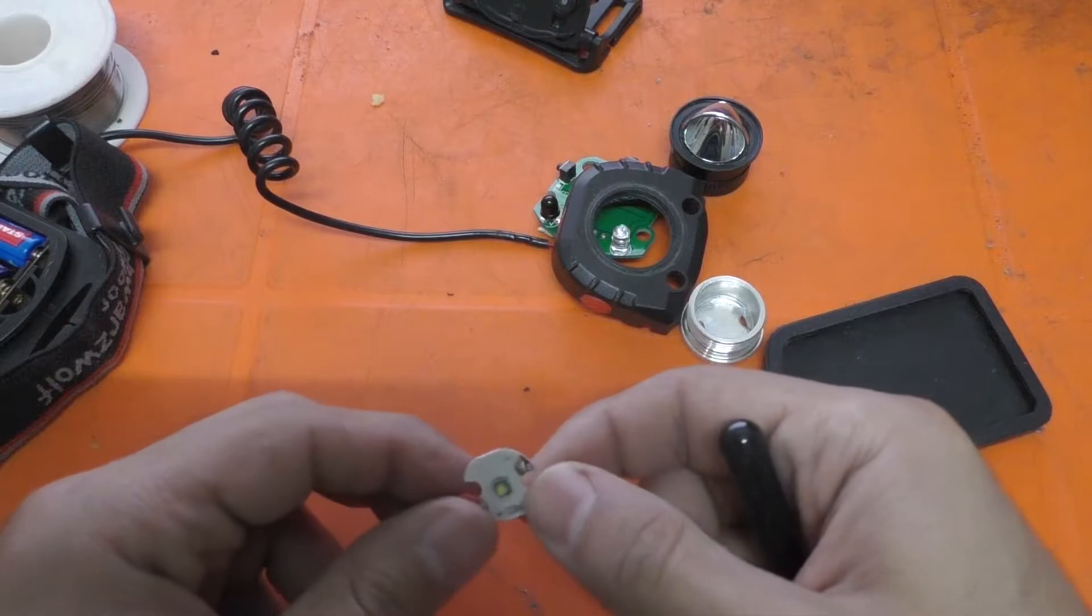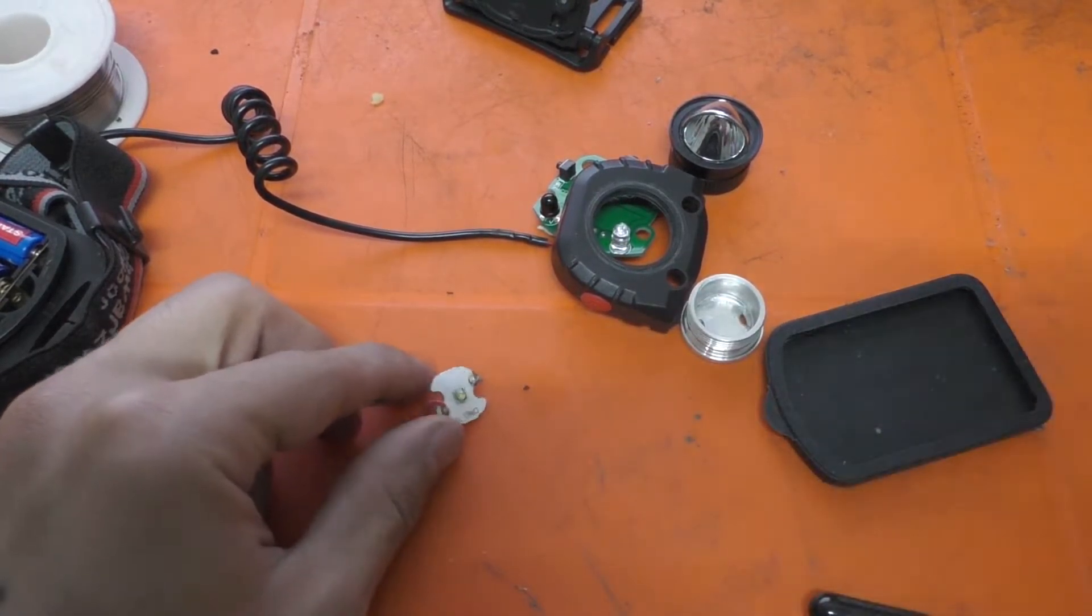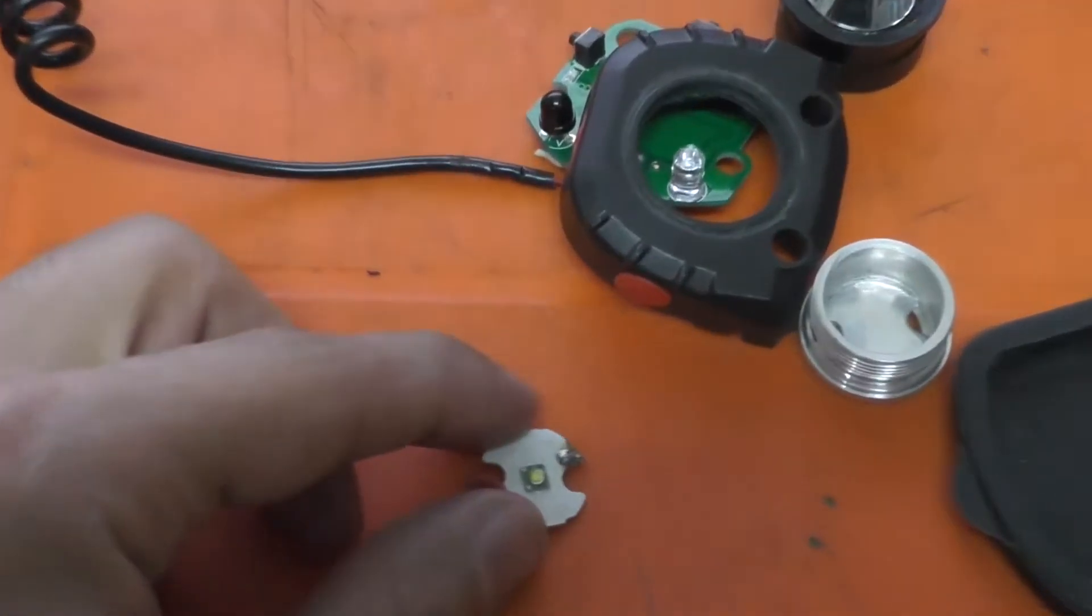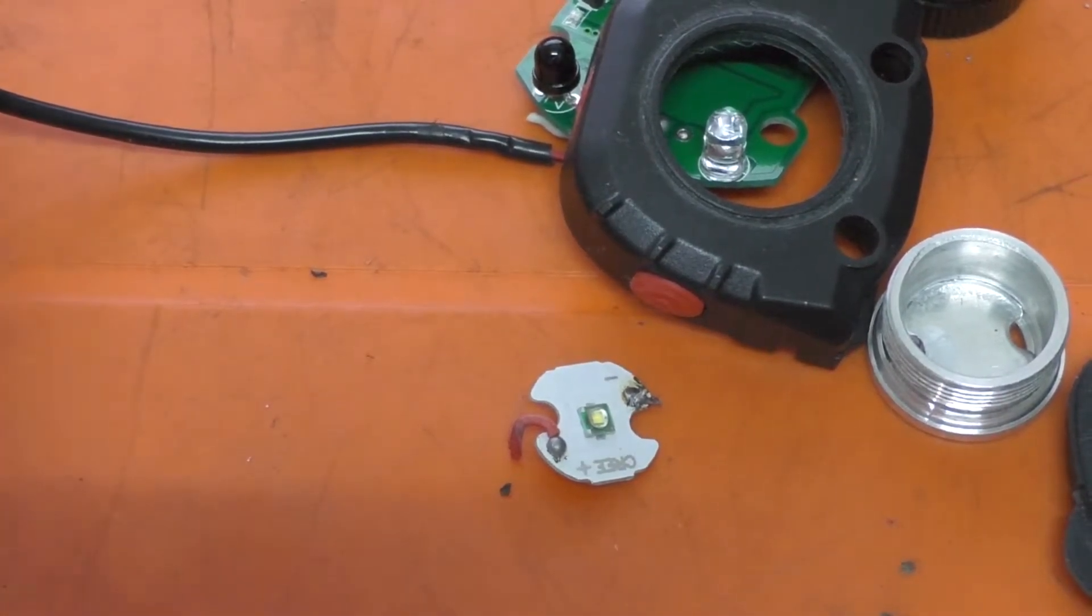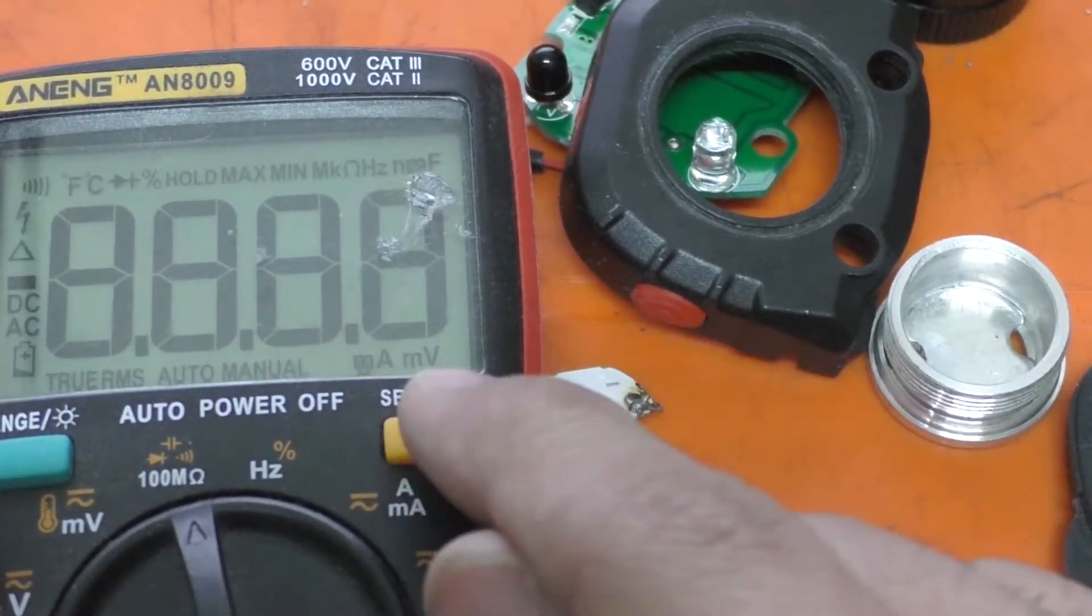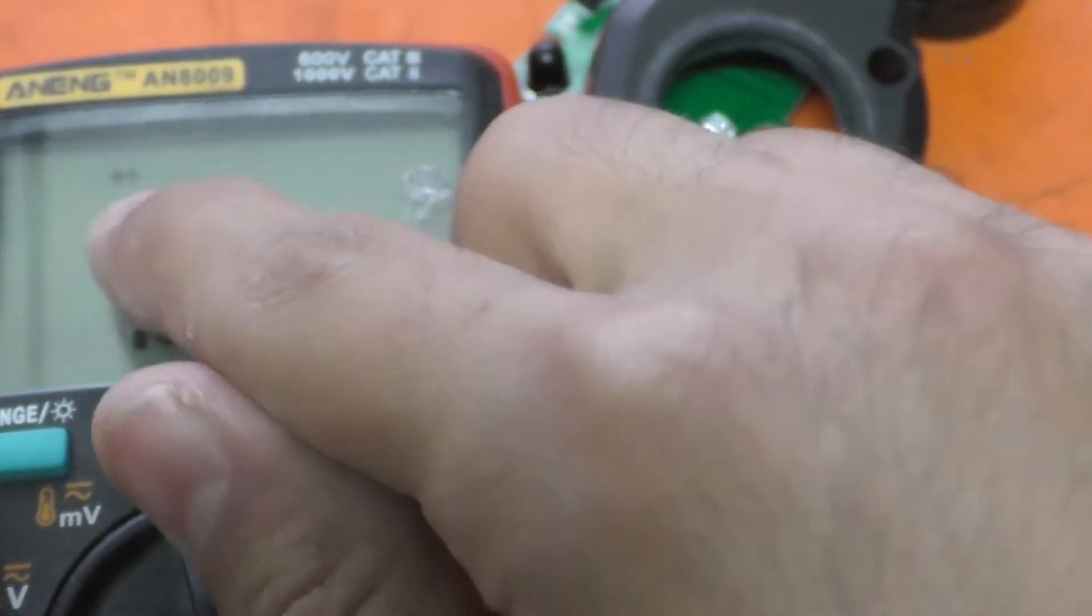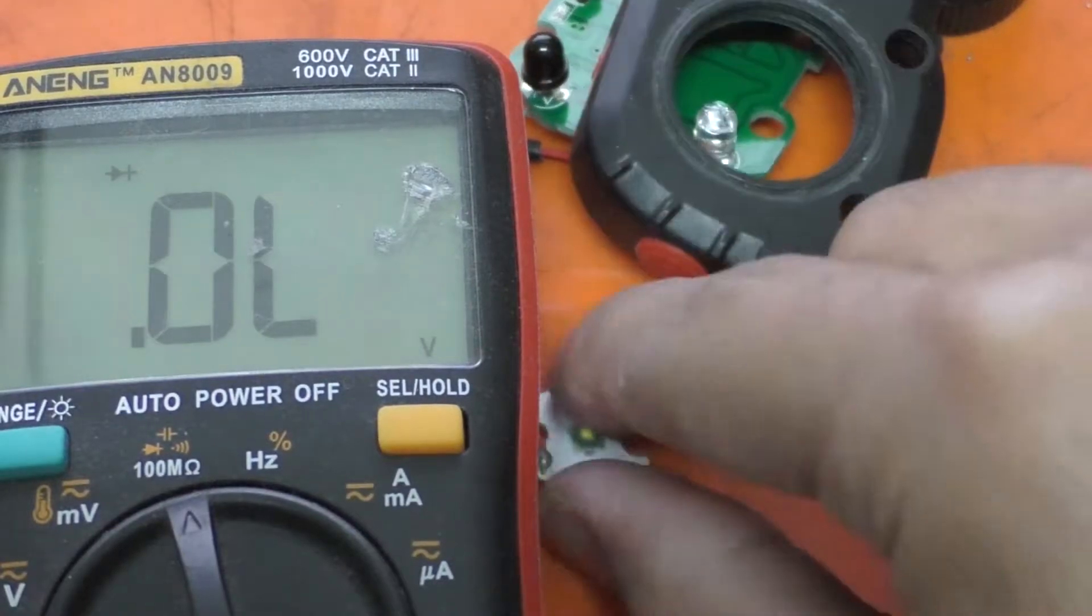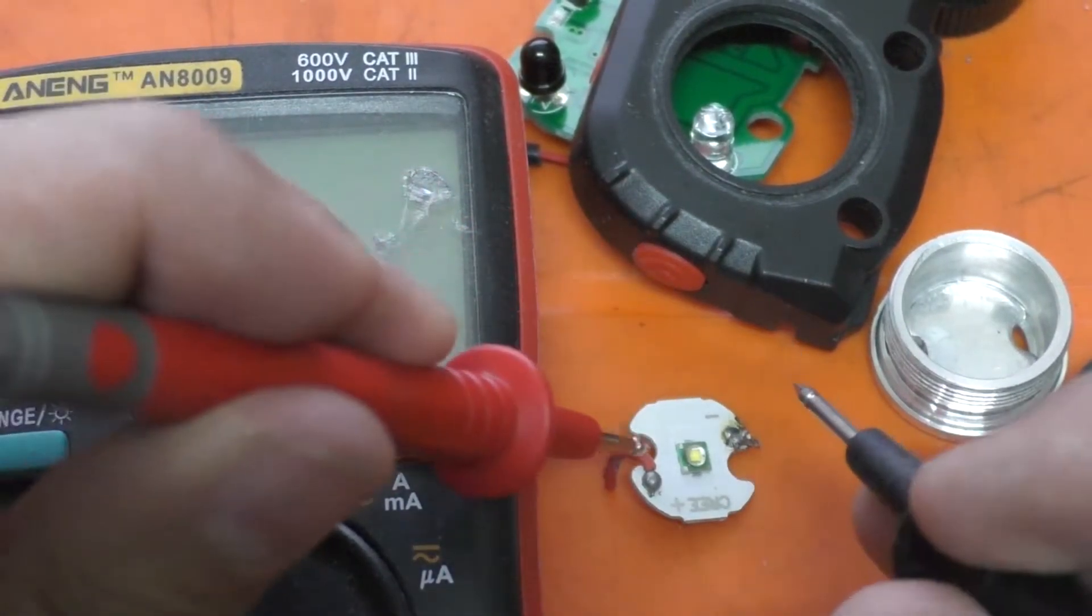So I thought first, before doing anything, all you need to do is grab the multimeter and put it on the diode mode, which is this one. As you can see, the diode mode. Grab your LED right here, put the positive on the positive and the negative on the negative, and the LED must be on.